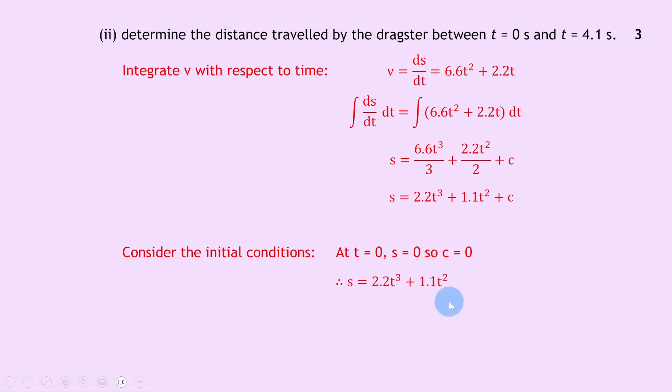We want to find the distance travelled in a total time of 4.1 seconds, so we substitute the time value. We have s equals 2.2 times 4.1 cubed plus 1.1 times 4.1 squared. Putting that into your calculator should give you an answer of 170 metres.